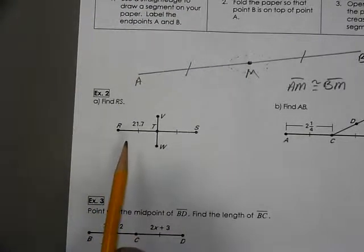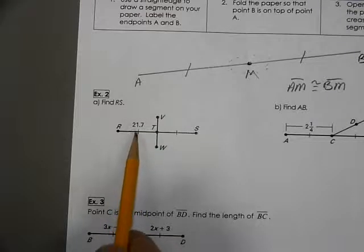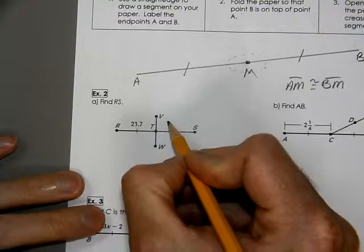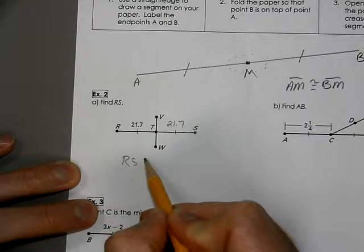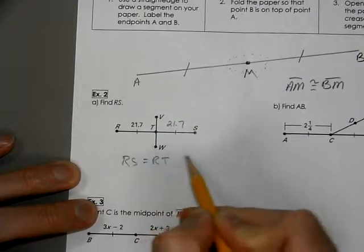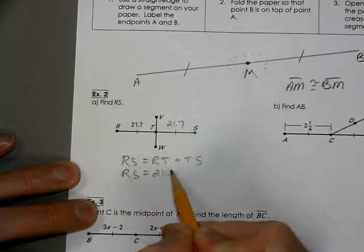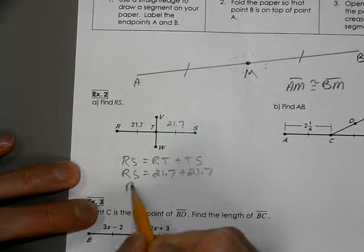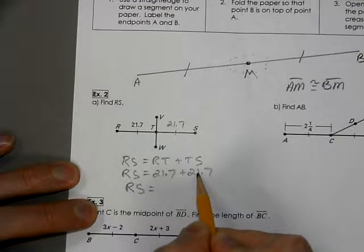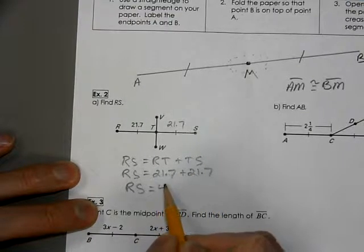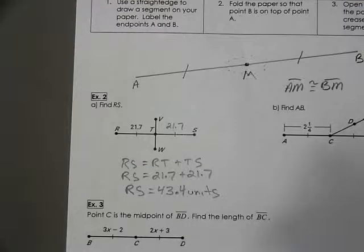Here we'll look at a few examples. We're trying to figure out what the length of RS is. We have these tick marks indicating they're both the same length. Using our segment addition postulate, RS is made up of RT plus TS. We have 21.7 and 21.7, so if we add those together, we get 43.4 units.